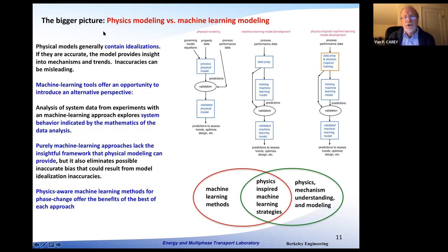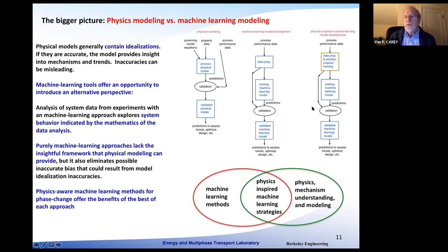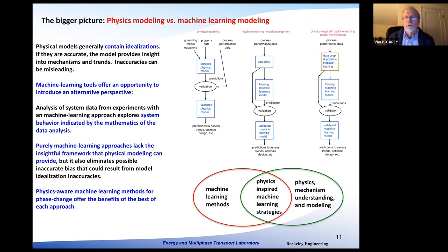Stepping back and looking at the bigger picture, this leaves us with three options: you can do physical modeling for a phase change problem; you can do a purely machine learning model where you treat the data just as numbers; or you can bring in physics-inspired framing, which simplifies things and makes the process more efficient. The objective is to point out that this hybrid approach brings together the best of both processes, allowing you to attack very challenging problems.